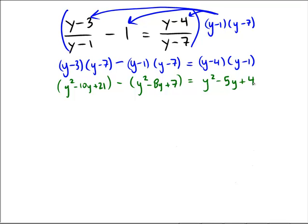Okay, now, this time, let's collect like terms. y squared minus y squared. Negative 10 minus negative 8 would be minus 2y. 21 minus 7 would be 14 equals y squared minus 5y plus 4.